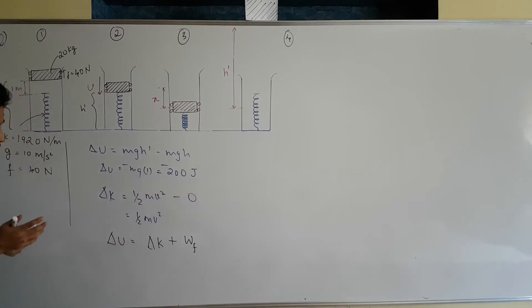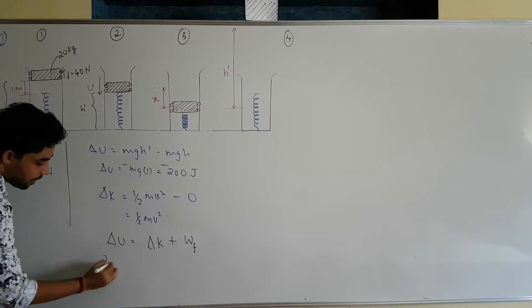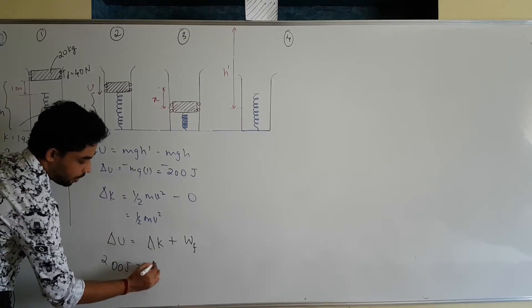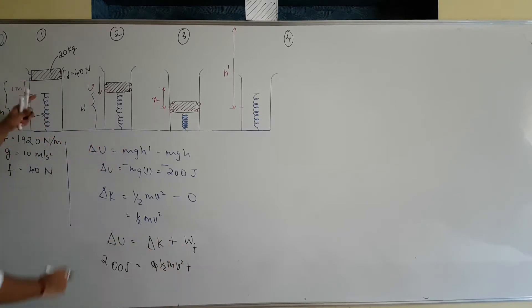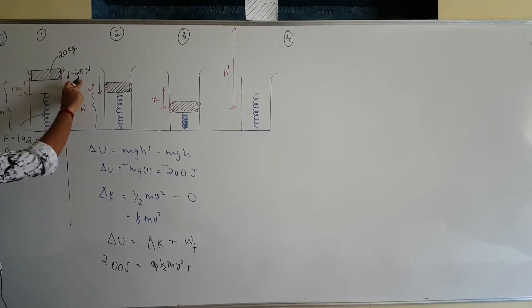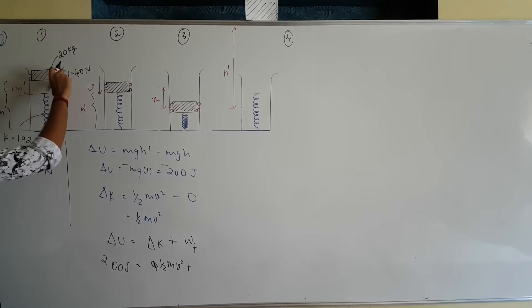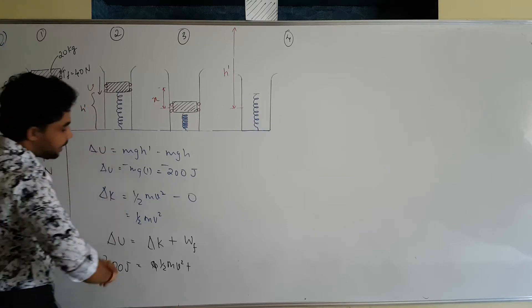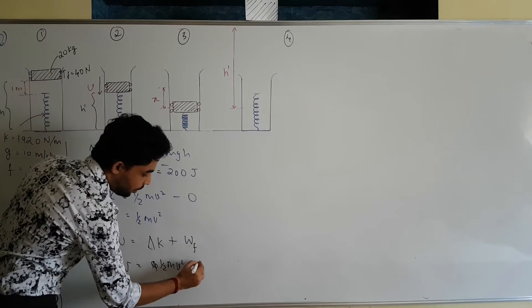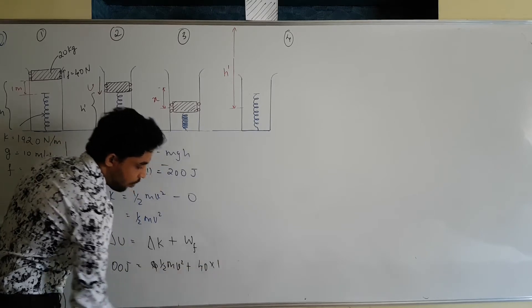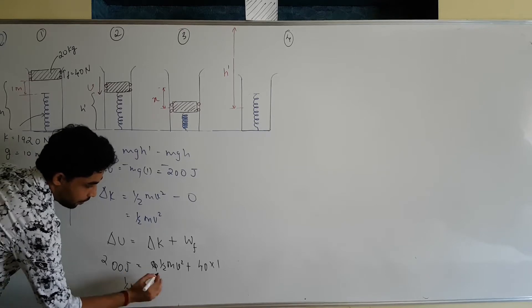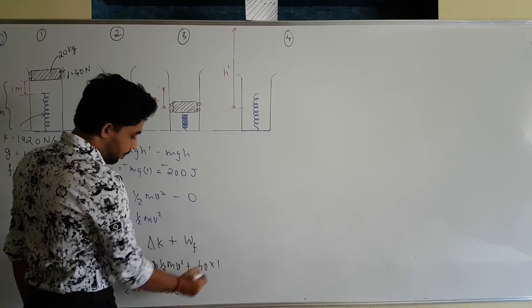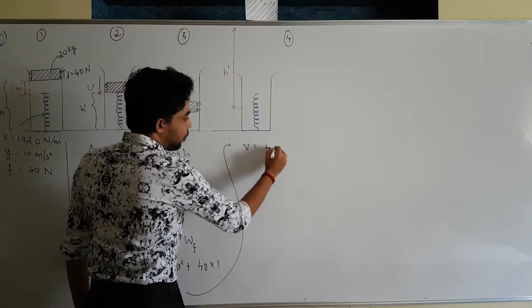Substituting the values: 200 joules = ½mv² + (friction force × distance) = ½mv² + (40 × 1). This gives ½mv² = 160 joules. Solving for velocity, we get v = 4 m/s.